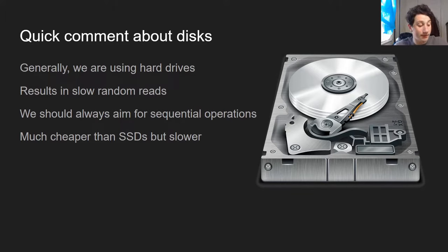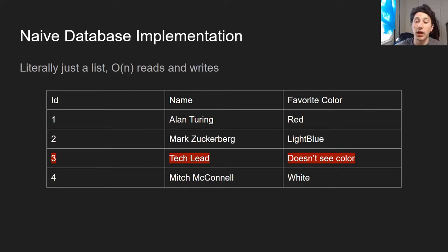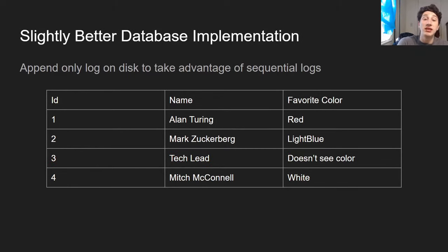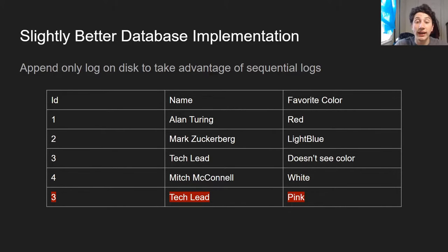Having to jump around the disk means the mechanical arm has to do even more searching and it takes much longer. A naive database implementation is basically an array of tuples — every time you want to read, you search through the array; every time you want to update, you also search through the array. Writes are still constant time, but this clearly isn't good enough. A slightly better implementation is an append-only log, where you overwrite things by just writing an additional entry, which benefits more from sequential writes.